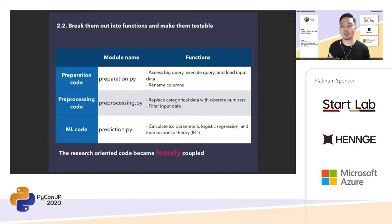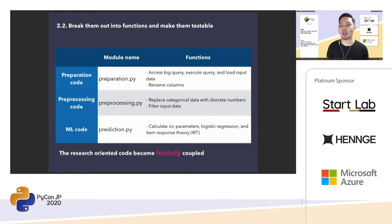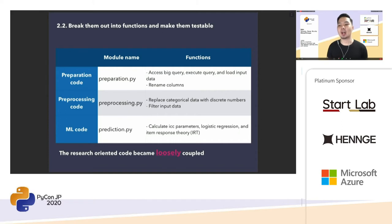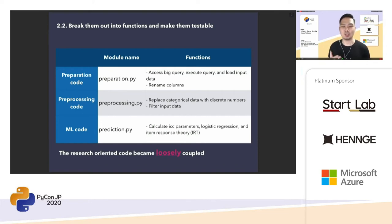We could get modules for each from one page of research-oriented code. preparation.py has functions to access BigQuery, execute query, load input data, and rename columns. preprocessing.py has functions to replace categorical data with discrete numbers and filter input data. prediction.py has functions to calculate parameters, logistic regression, and item response theory — also called two-parameter logistic regression — which is used for calculating probabilities to get students' correct answers. This is a statistical method used mainly in the pedagogical domain. Now we can see the research-oriented code became loosely coupled.